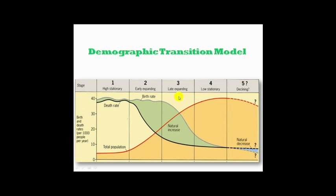In Stage Three, the Late Expanding stage, the death rate continues to fall rapidly, and the birth rate also starts to fall rapidly — unlike the static birth rate seen in the early expanding stage. As a result, the natural increase decreases and the population explosion starts to stabilize. Many developing countries like India, China, and Brazil are currently in this stage. The reasons include: increased access to birth control measures, lower infant mortality rate, fewer child laborers needed due to mechanization in industries, and social change from large families to nuclear families, with a focus on gender equality and the increased status and education of women.